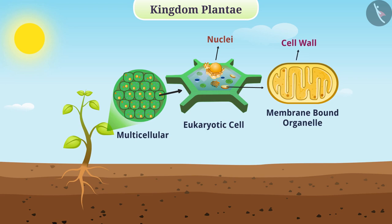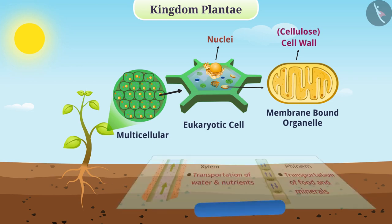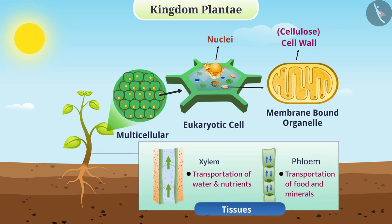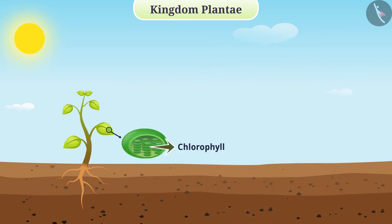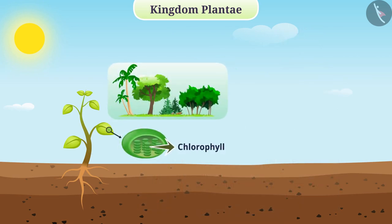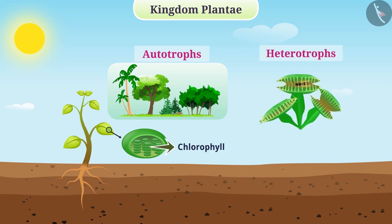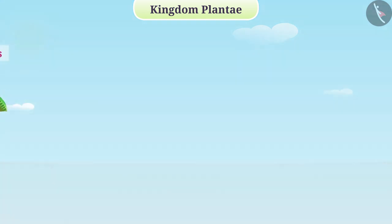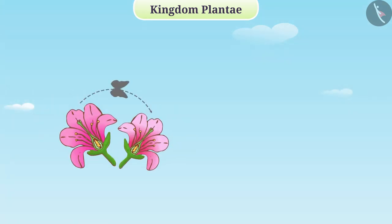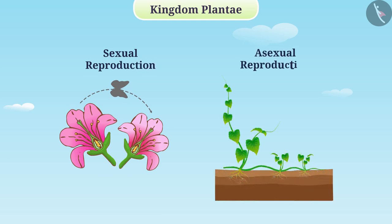They contain cell walls which are mainly made up of cellulose. Different functions in their body are performed by tissues. Due to the presence of chlorophyll, most organisms in this class are autotrophic, but some are also heterotrophs. Some organisms produce offspring from sexual reproduction and some from asexual reproduction.